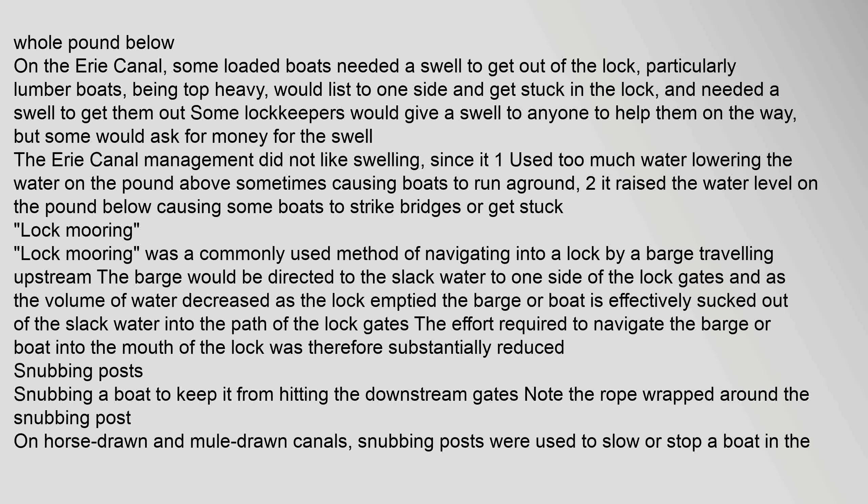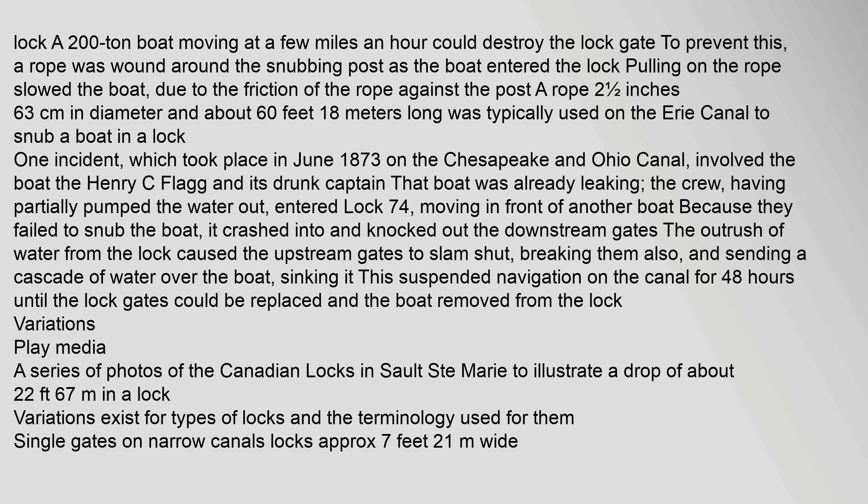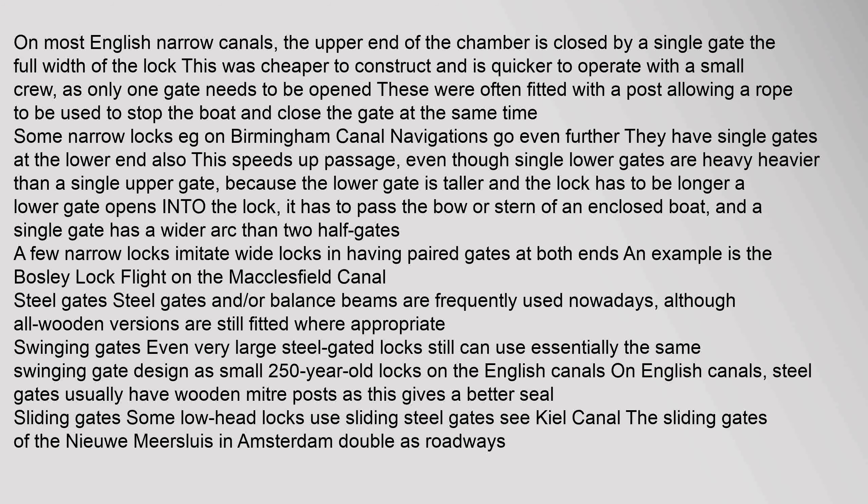Snubbing posts were used on horse-drawn and mule-drawn canals to slow or stop a boat in the lock — a 200-ton boat moving at a few miles an hour could destroy the lock gate. To prevent this, a rope was wound around the snubbing post as the boat entered the lock; pulling on the rope slowed the boat due to friction. On most English narrow canals, the upper end of the chamber is closed by a single gate the full width of the lock — cheaper to construct and quicker to operate with a small crew.